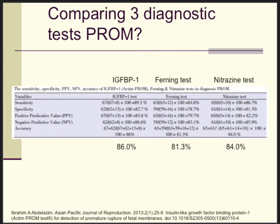However, an interesting study published in the Asian Pacific Journal of Reproduction compared back-to-back an IGF-B1 test, a ferning test, and a pH test. When you add all the test characteristics up, total accuracy was 86%, 81%, and 84% respectively. The study included about 75 women found to have ruptured membranes and 71 who didn't — a reliable study setup. Altogether, it depends where you work and your local health service budget. But all these tests have value, and especially if you're familiar with the ferning test and know what ferning looks like under the microscope, it's a very easy and quick test.